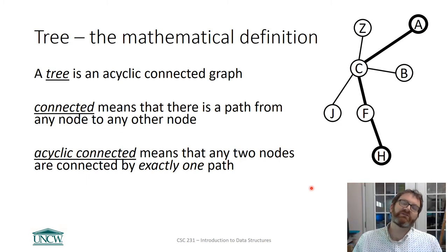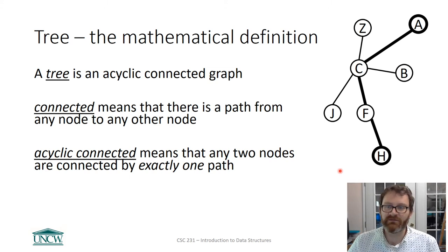A tree is a special type of graph that is an acyclic connected graph. So what in the world does that mean? Well, connected means that you can get to any node from any other node.